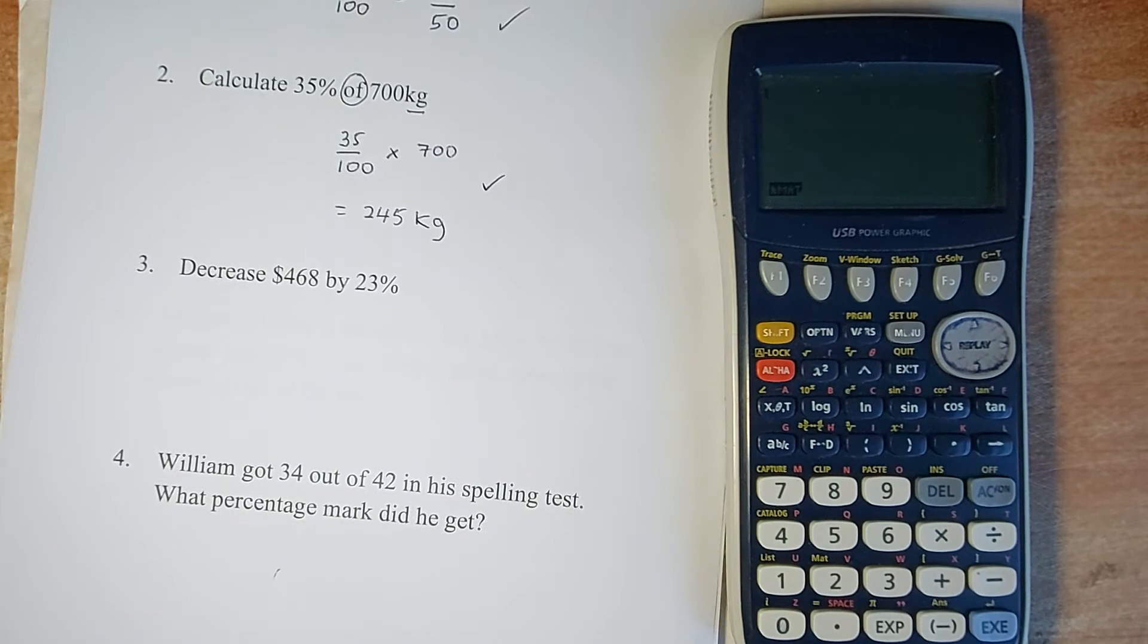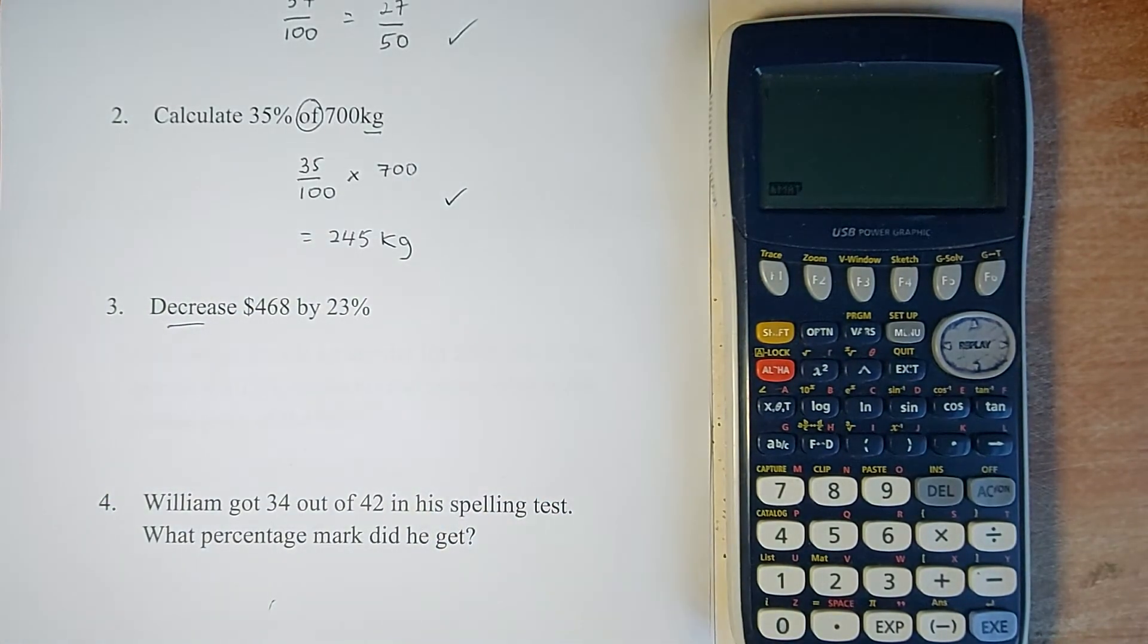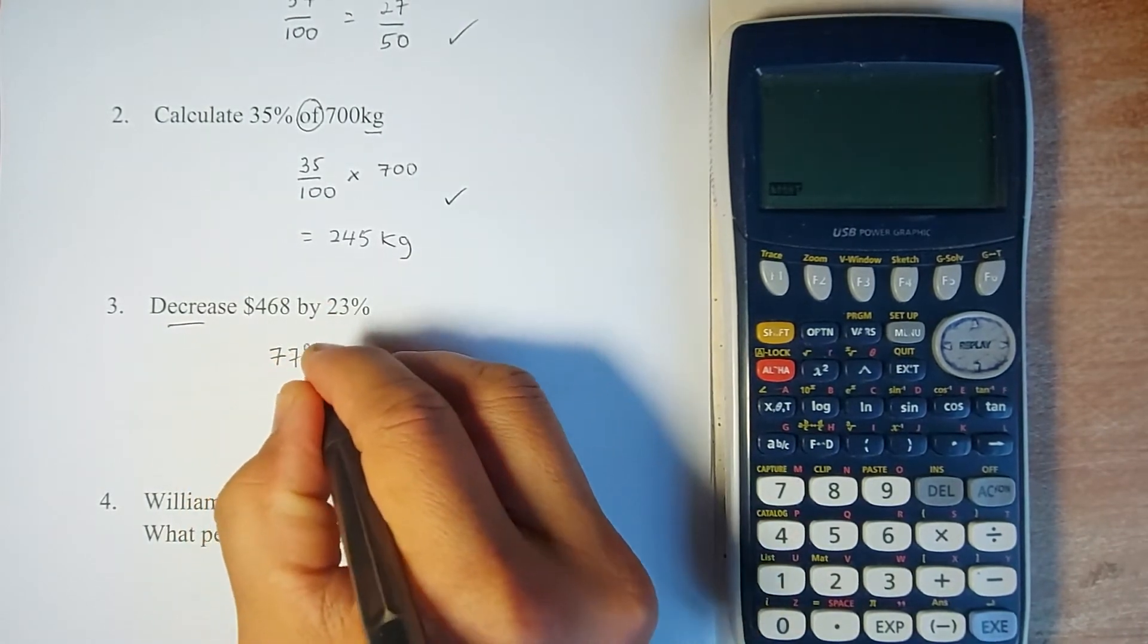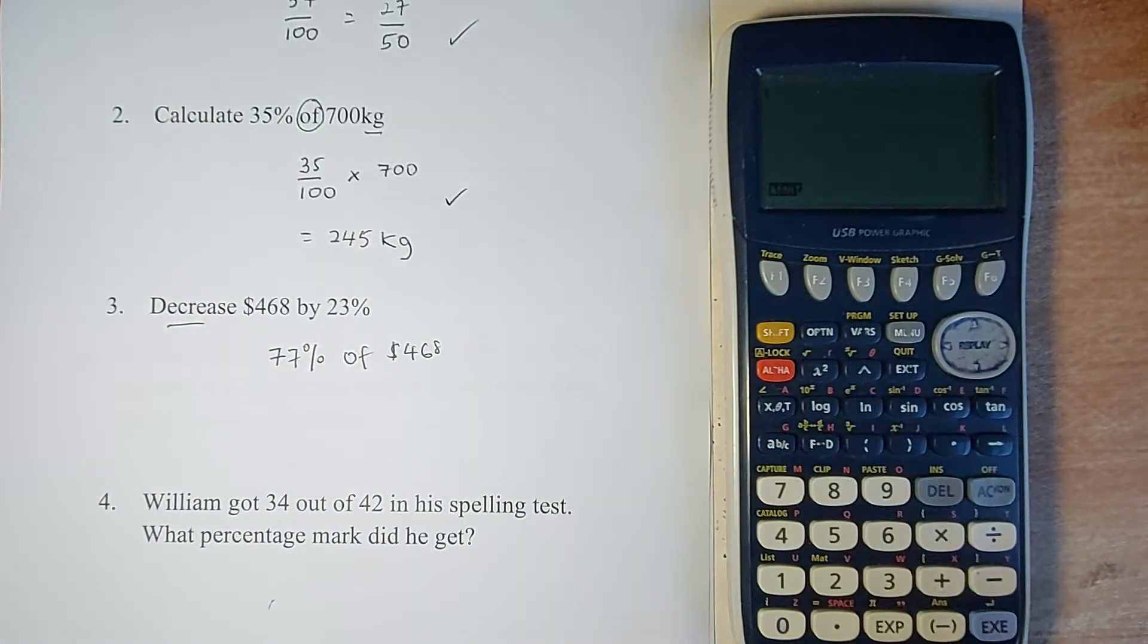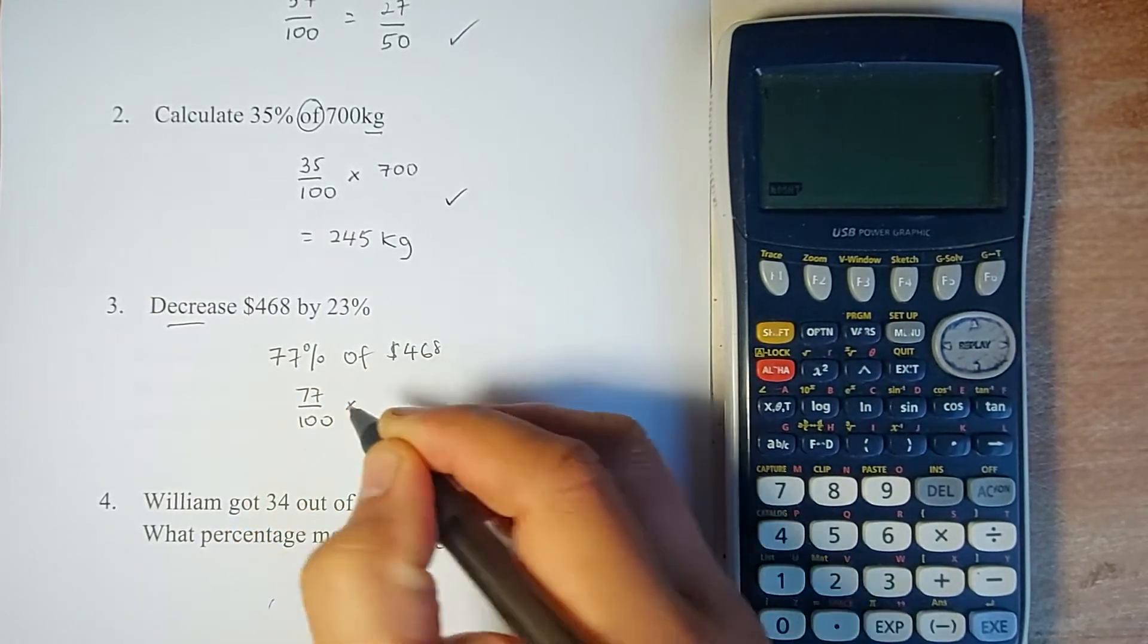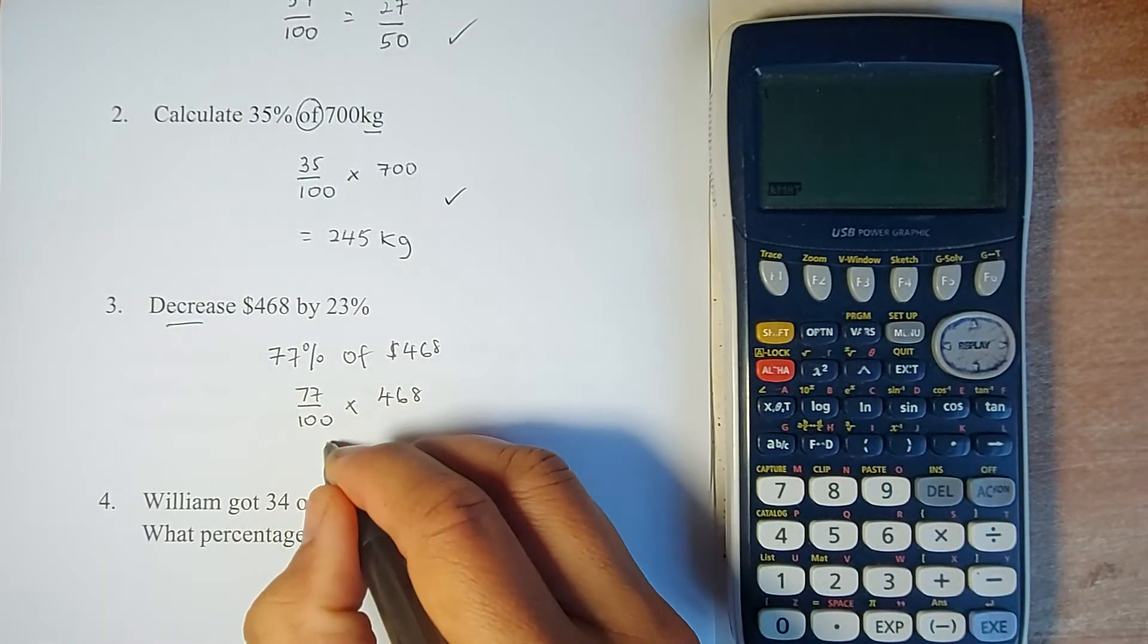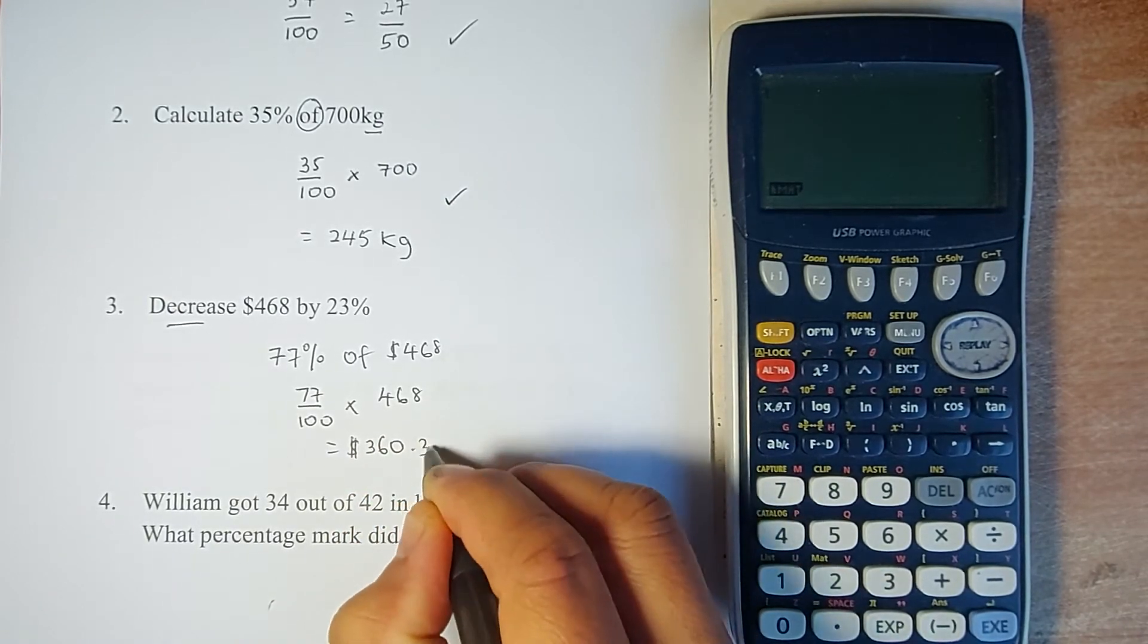The third one: there are many ways of doing it, but I'm going to do the short way. If you decrease by 23%, originally it was 100%, so the amount is 77%. 77% of $468. You just need to take 77 out of 100. 'Of' means multiply by 468. Put it in your calculator and the answer is $360.36.